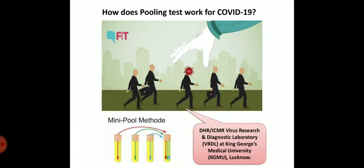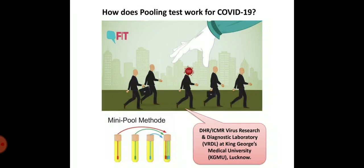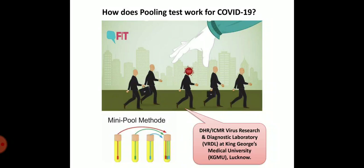Coming to how pooling works — I'll explain in a very simple manner. Imagine five people in a population and you want to test whether they are infected with SARS-CoV-2. We are not sure — two might be infected, one might be infected, or in worst cases all five might be infected. Instead of individual testing, we pool the five samples. Based on the results, we go and test which individual patient is positive.